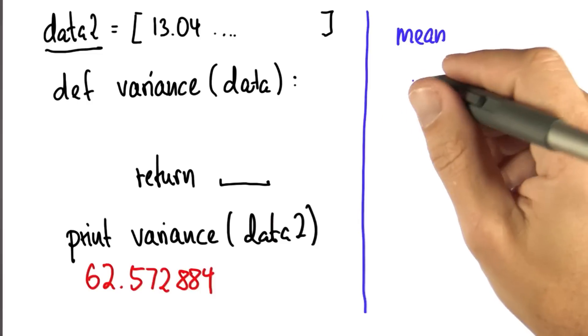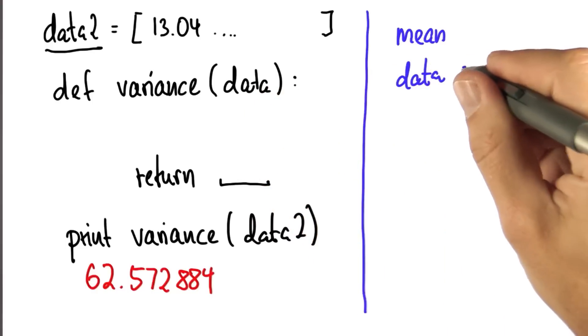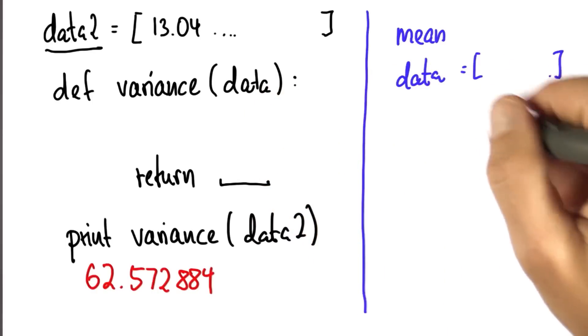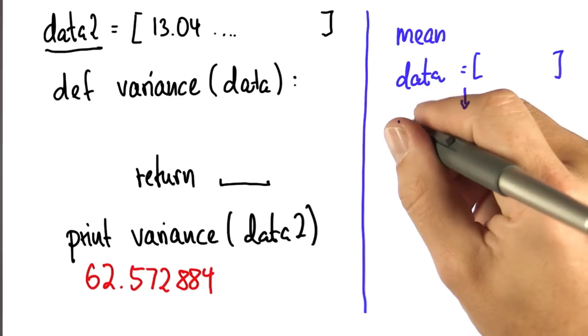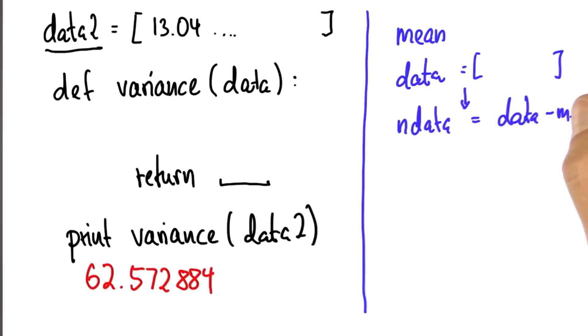And then the trick that I want to play is we have our list here inside the function data, and I want to transform this into a new list called ndata. It is the normalized data, which effectively is the data minus the mean, which I call mu. So you compute the mean, call it mu perhaps, and then subtract from the data, from each data item, the mu.